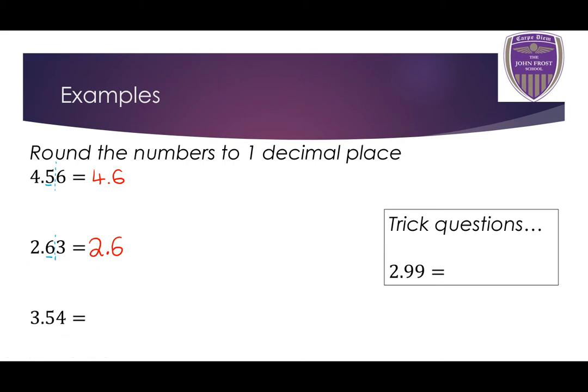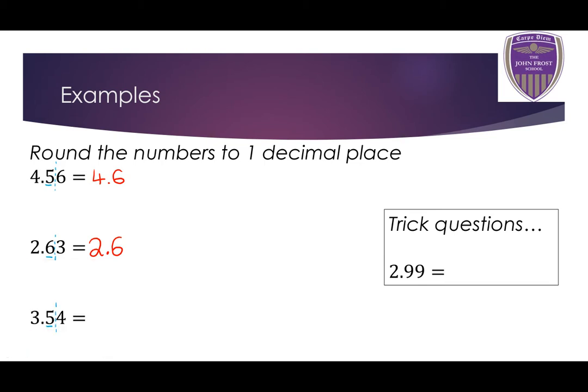Then we've got 3.54 to one decimal place. The 5 is in the first decimal place column, so I draw a line after that. Is the number after the first decimal place 5 or bigger? It's 4, so that isn't 5 or bigger, meaning that 5 is going to stay as it is. So 3.54 rounded to one decimal place is 3.5.